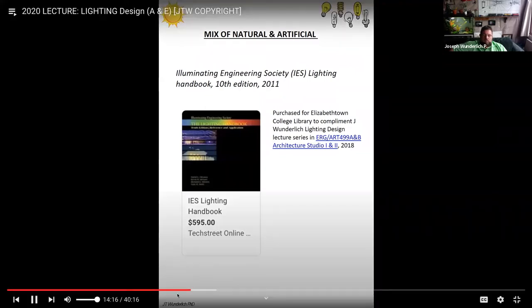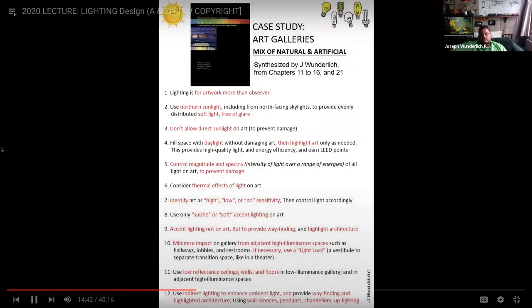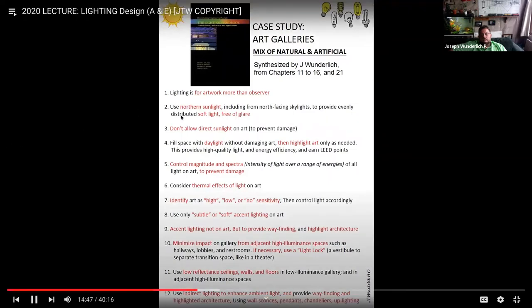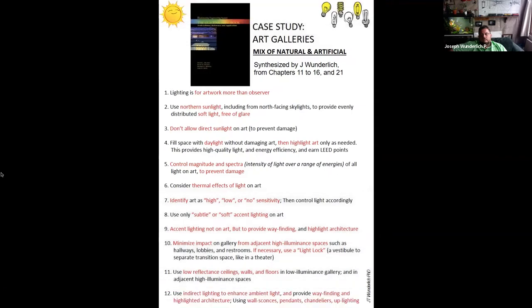Now we want to look at some specific things. This is something I got convinced the library to buy. It was very expensive, about $500. You see here next a case study on galleries. This is for the artwork. You want to focus on the artwork and not the people. You want to use northern sunlight for soft light free of glare. It goes for all studios typically. Don't allow direct sunlight on the art, it can damage things.